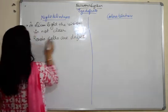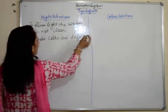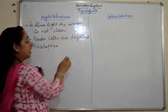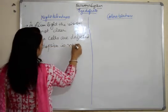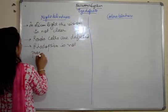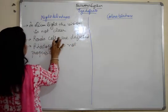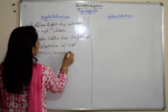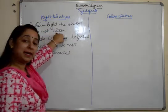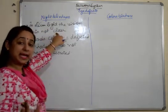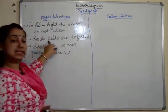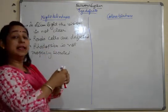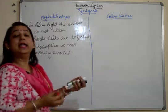The rod cells produce rhodopsin, which is not properly secreted. So what is happening in night blindness is that we do not clearly see in dim light. The reason is that rod cells are defected and rhodopsin is not properly secreted. Here is a very important point about rhodopsin secretion.